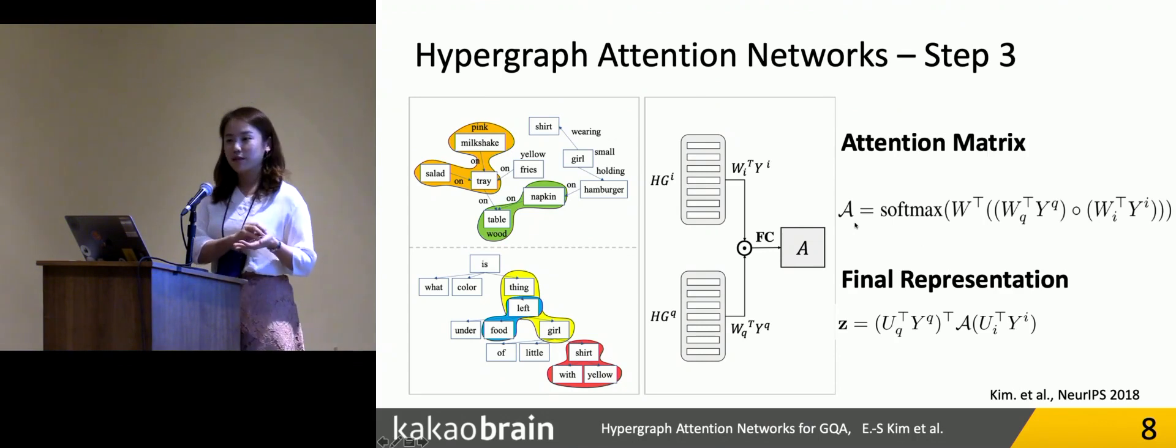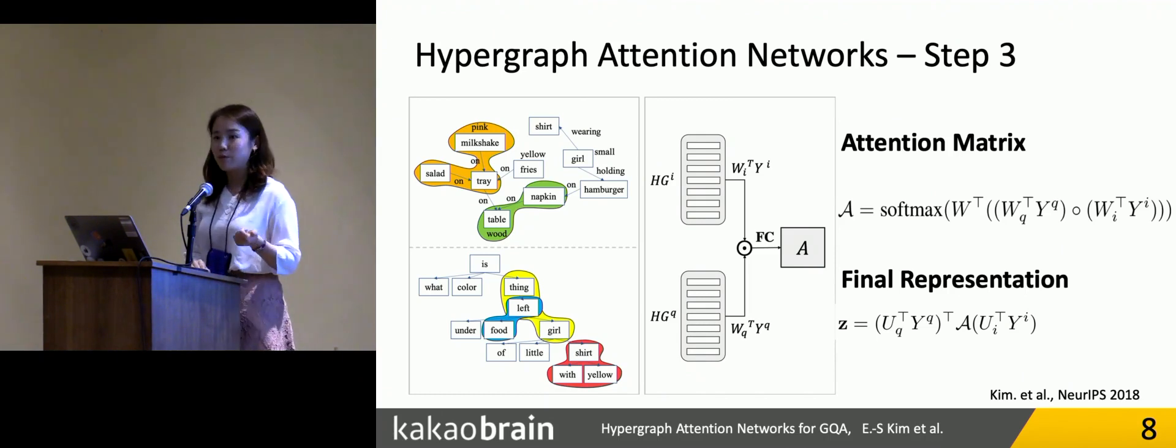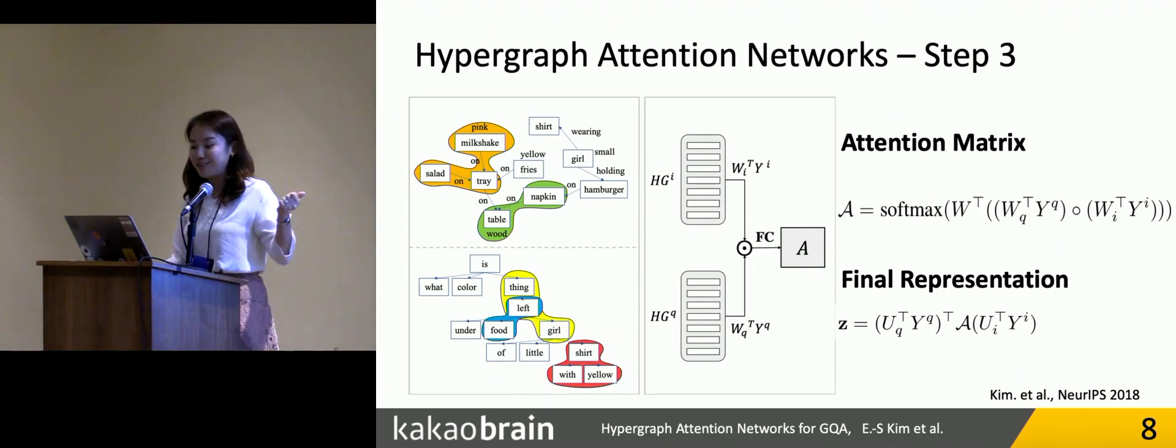After getting the attention matrix A, we can combine this attention matrix A with another VQA method like BAN or MFB, which are using the bilinear relationship between two modalities. This is our method.